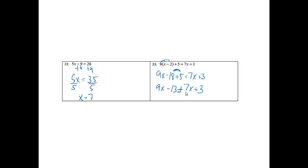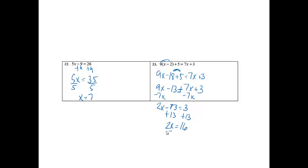I now know that I need to get the x's on the same side, so to get rid of the 7x, I'm going to do minus 7x to both sides. So I'm going to get 2x minus 13 equals 3, and then to continue solving for x, I will add 13 to both sides. So I'll get 2x equals 16, and then to get rid of the 2, we'll divide both sides by 2. I will get x equals 8.